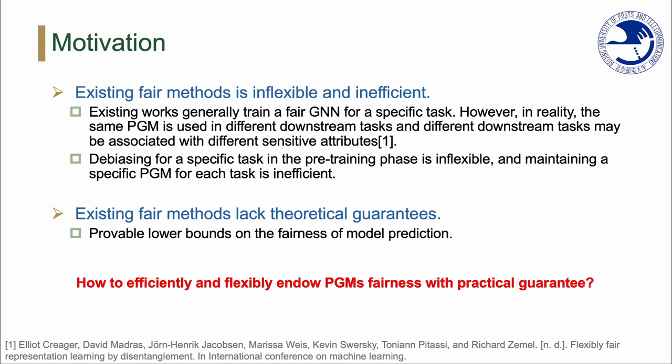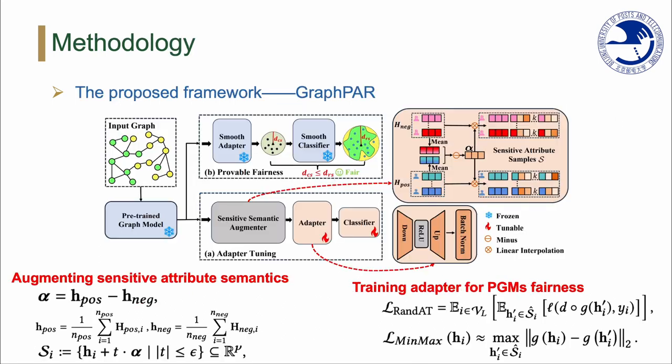Most existing works generally train a fair GNN for a specific task. However, in reality, the same PGM can be used in different downstream tasks, and different downstream tasks may be associated with different sensitive attributes. Debiasing for a specific task in the pre-training phase is inflexible, and maintaining a specific PGM for each task is inefficient. Besides, most of them lack theoretical analysis and guarantees, meaning they do not provide provable lower bounds on the fairness of model prediction.